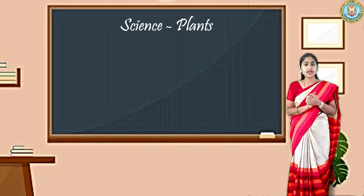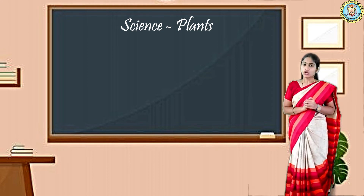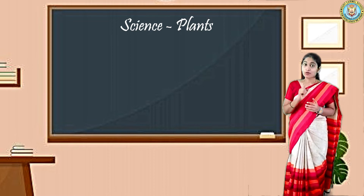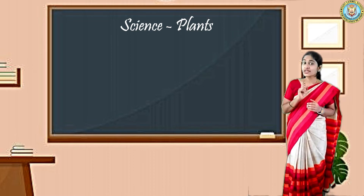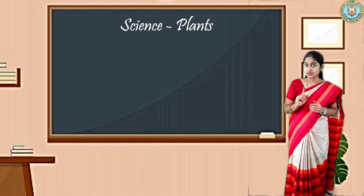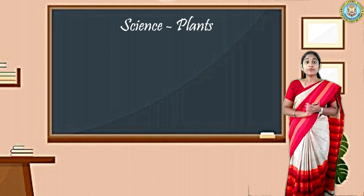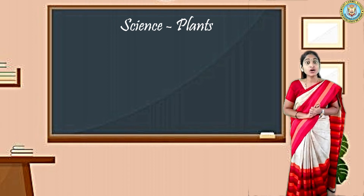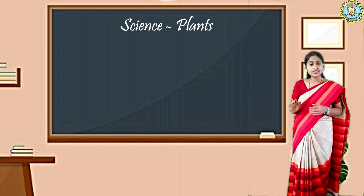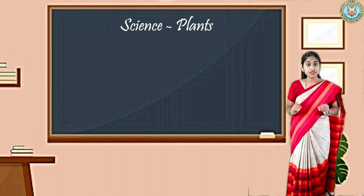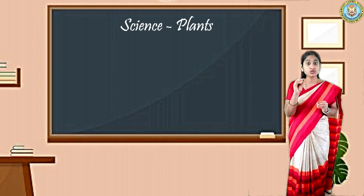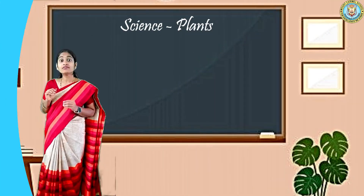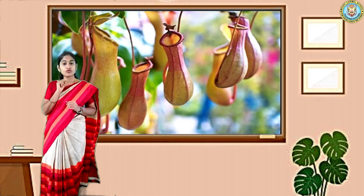This insectivorous plant is also called a carnivorous plant. You know about carnivorous animals — those that eat only animals. Similarly, these plants also eat animals — small animals, insects, mosquitoes like that.